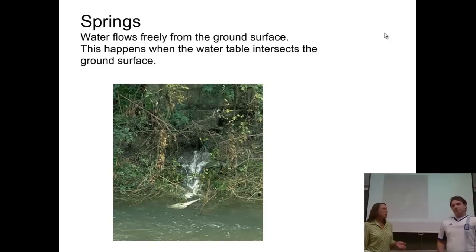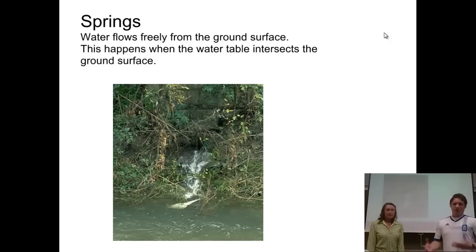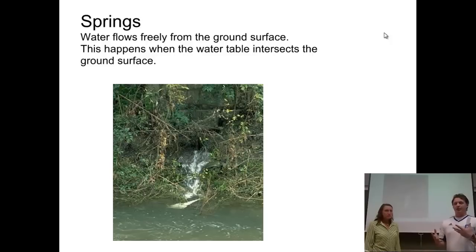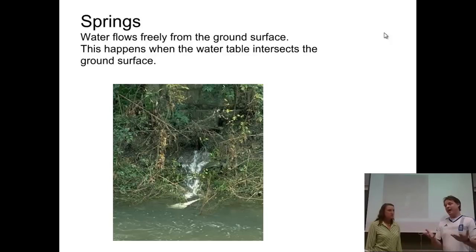We talked a little bit about springs before, but here's another example of a spring that's flowing freely out onto the surface — an actual picture of it. We talked about it in terms of a perched aquifer sitting on top of an impermeable layer, and then where that aquifer meets the surface, we actually have water flowing out. This picture looks like it's feeding into a larger body of water.